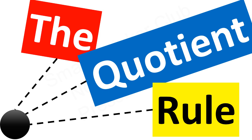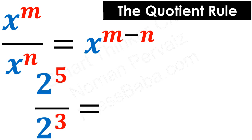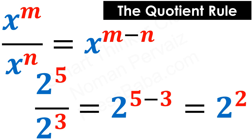The next topic is the quotient rule. In algebra, if we have two values whose bases are the same, in the result we take the base and the powers will be subtracted, with the power in the denominator getting the minus sign. For example, 2 raised to the power 5 divided by 2 raised to the power 3 — by applying the quotient rule, we take base 2 and write 5 minus 3, so we get 2 raised to the power 2.